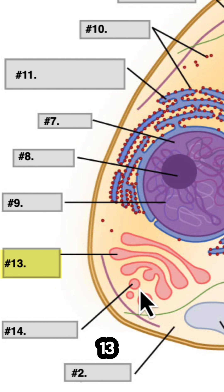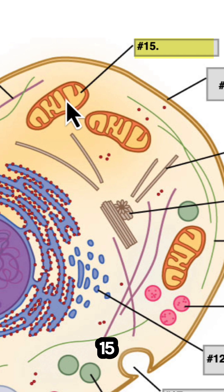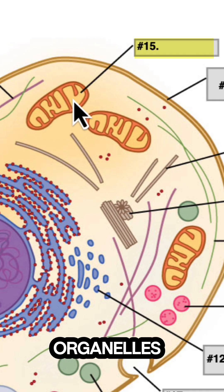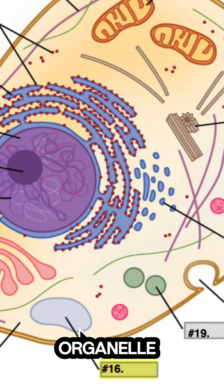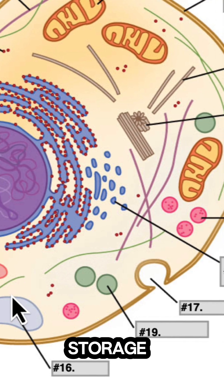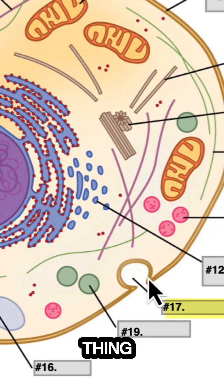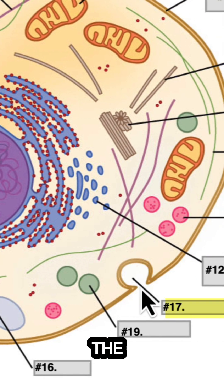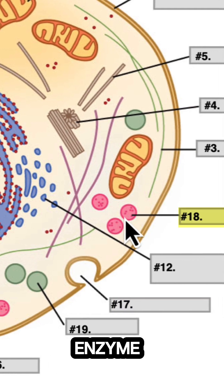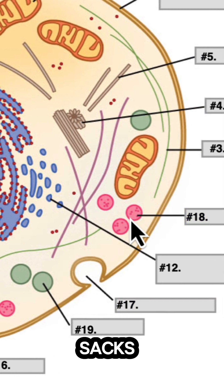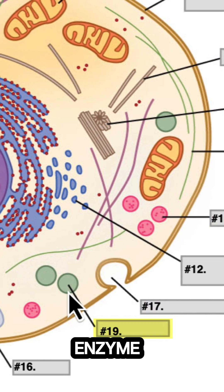And from number thirteen, we pinch off to number fourteen. Number fifteen: these bean-shaped organelles. Number sixteen is just a general organelle for storage. Number seventeen: this thing, which is excreting something into the extracellular space. Number eighteen: these are enzyme-filled sacs. And number nineteen: other enzyme-filled sacs.